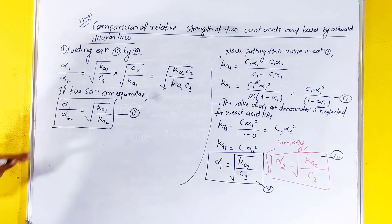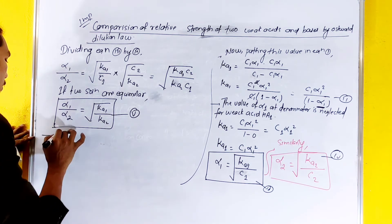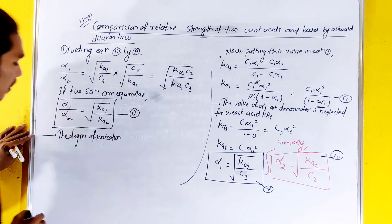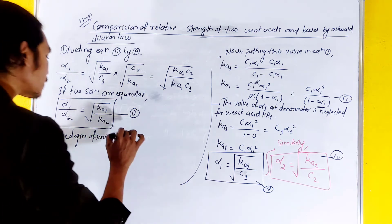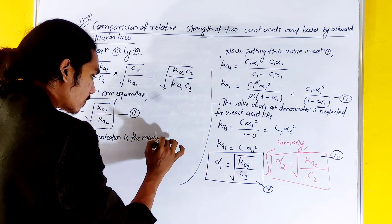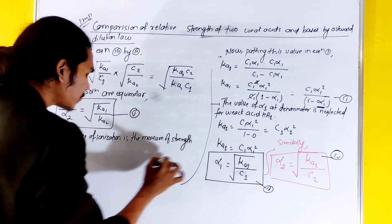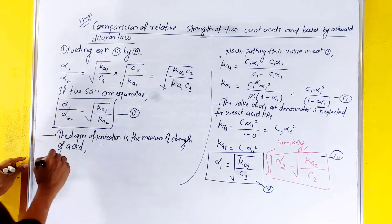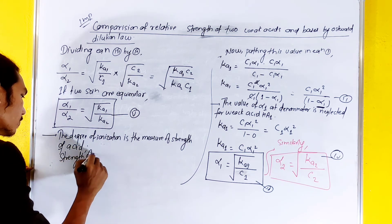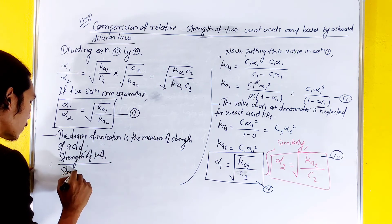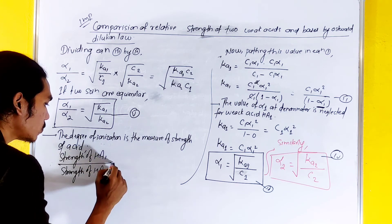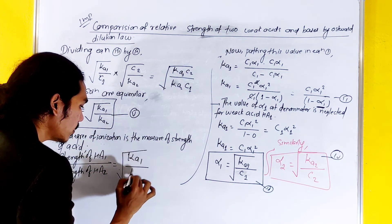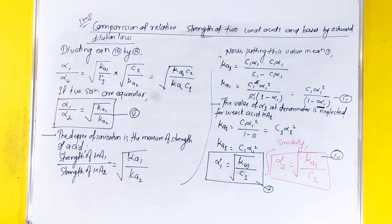The strength of an acid is measured by its degree of ionization. Therefore, strength of HA1 divided by strength of HA2 is equal to the square root of Ka1 divided by Ka2.